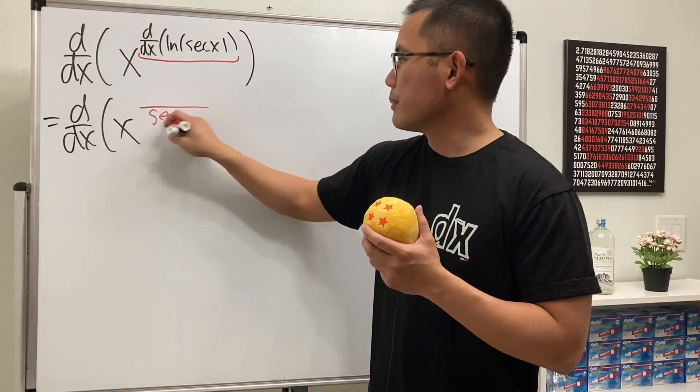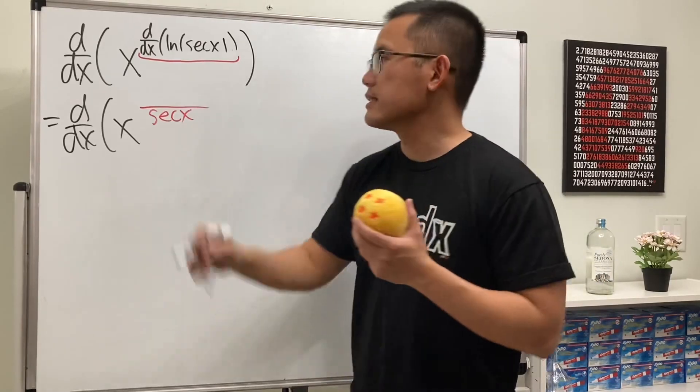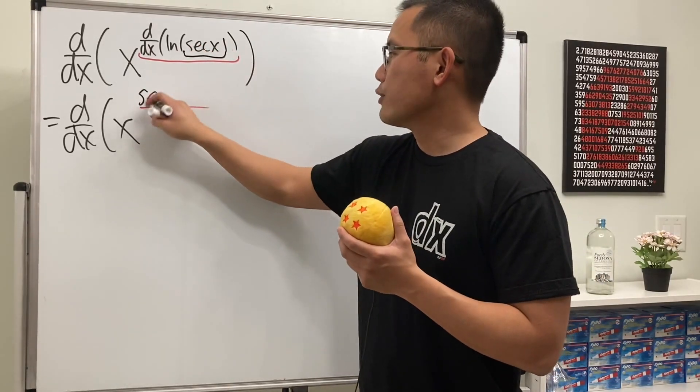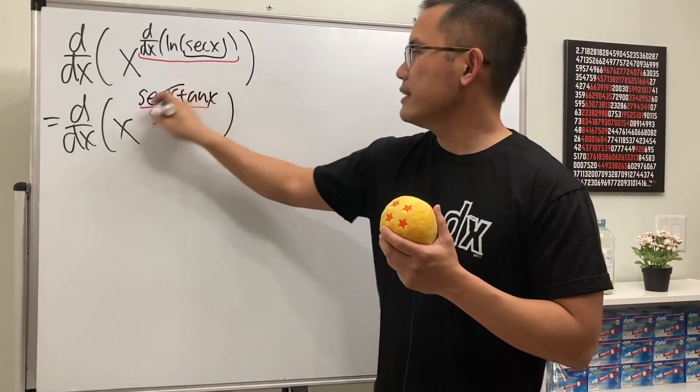Well, right here you put this down on the bottom first, and then the derivative of secant x. Don't forget the chain rule, right? So we have to multiply by secant x times tangent x. So in fact, this and that we can...